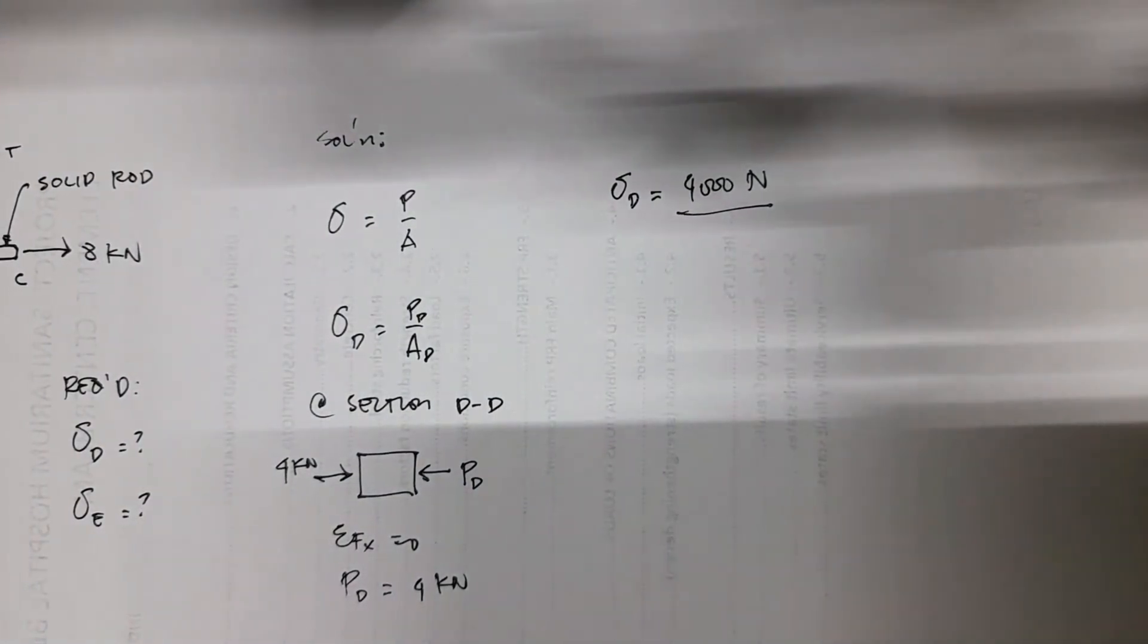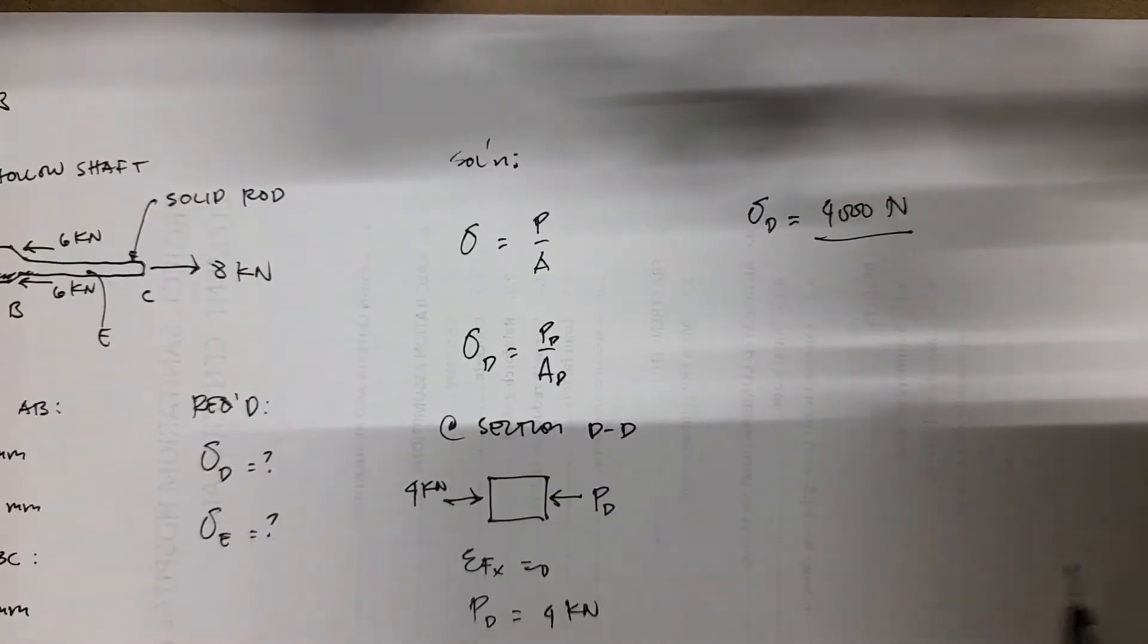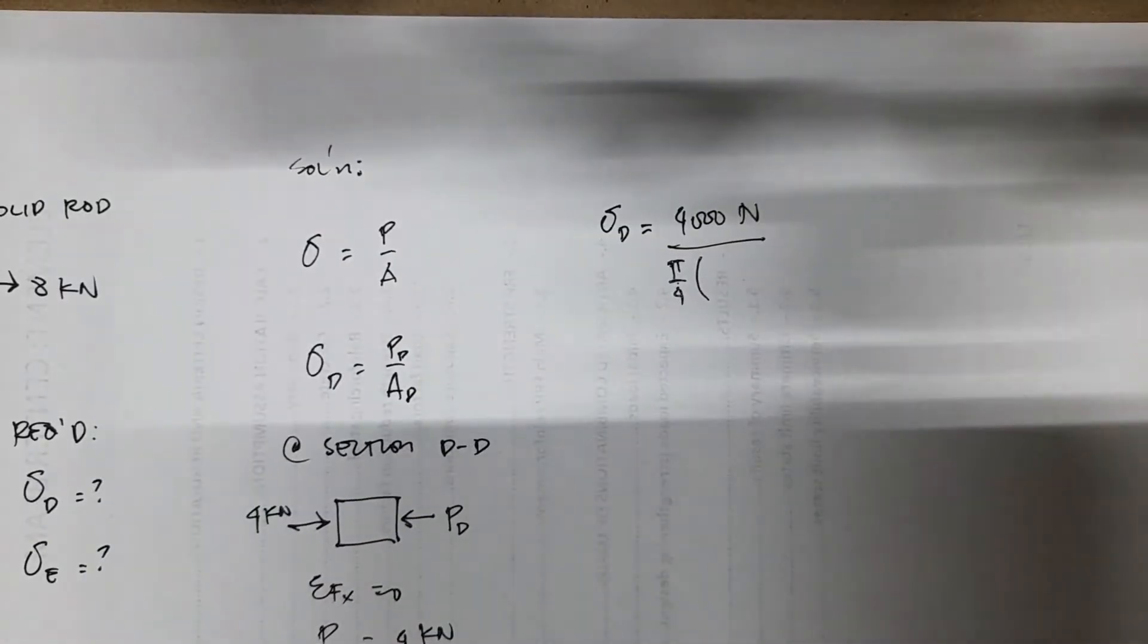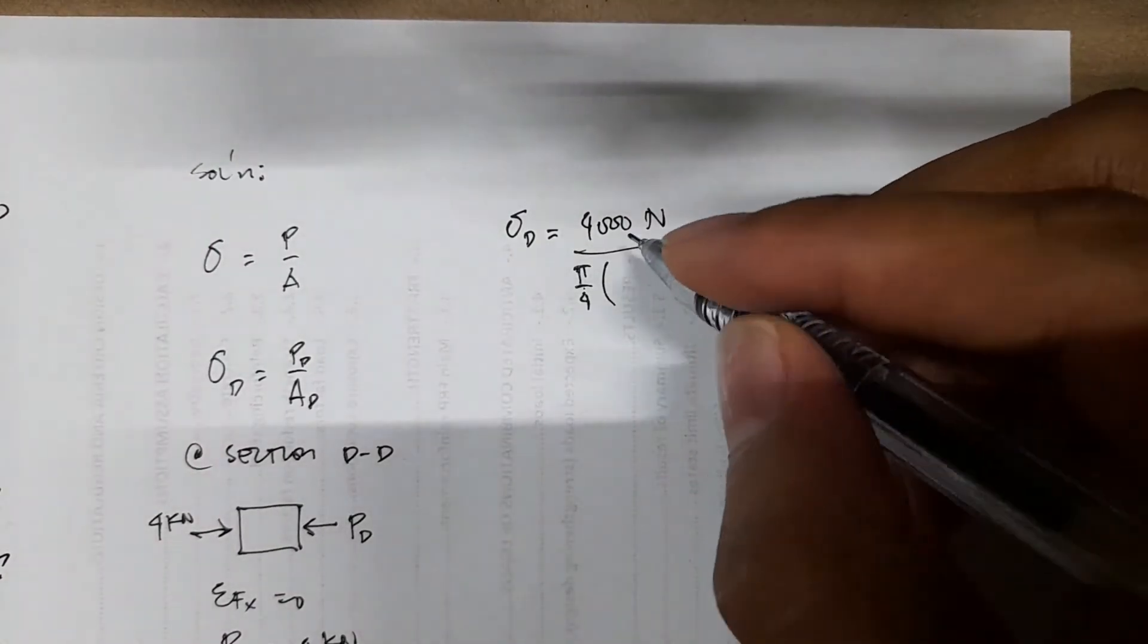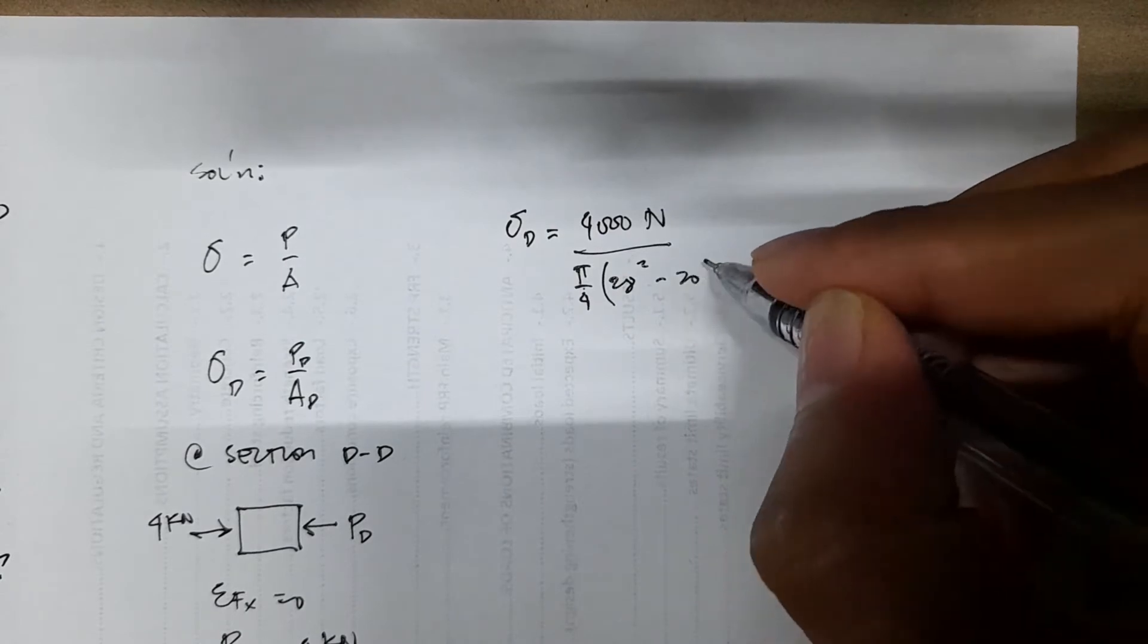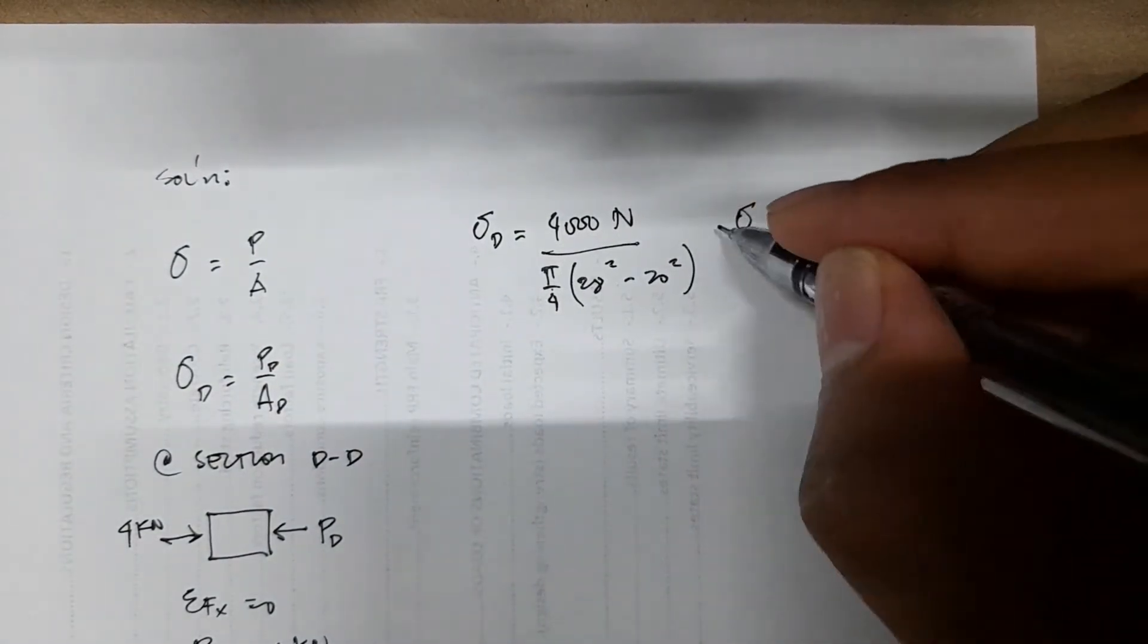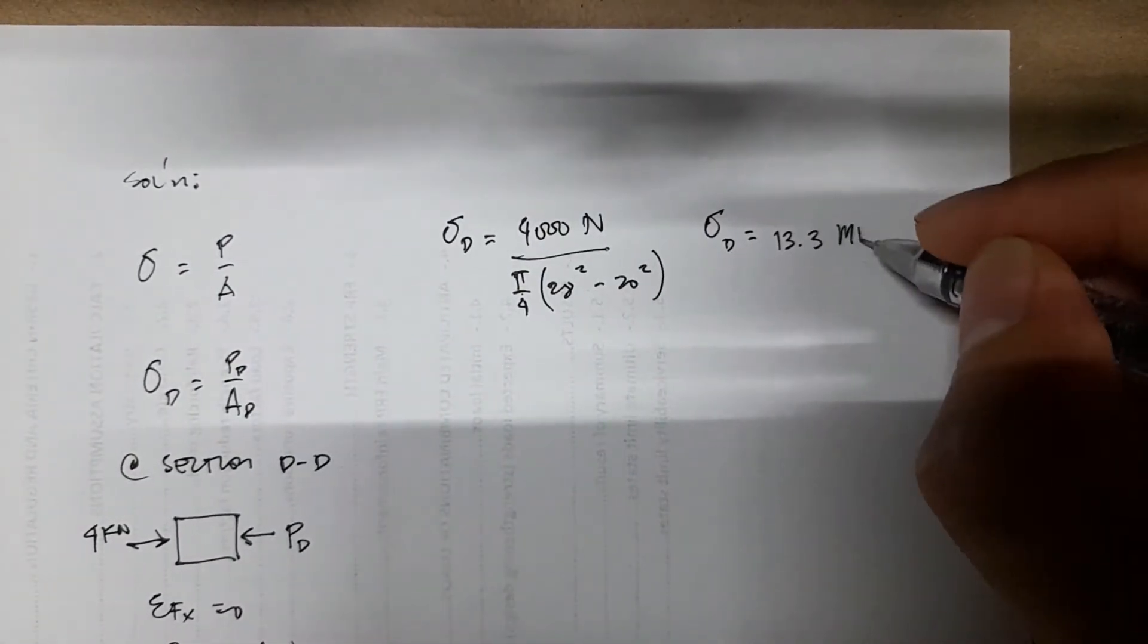Divided by the area now. Since the section D is at the hollow shaft, you have the area equals pi over 4, D outer squared minus D inner squared. So you have 28 squared minus 20 squared. Stress D equals 13.3 megapascals.